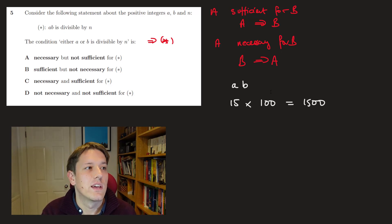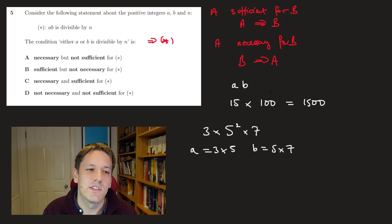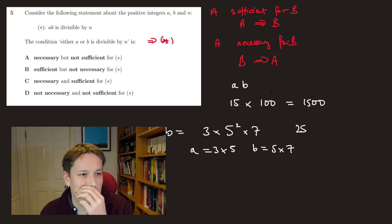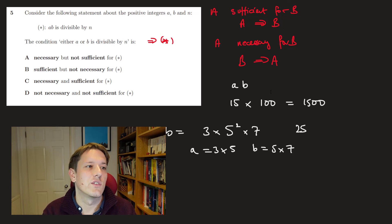Now, is it necessary? So is it the case that when a times b is divisible by n, that 1 of a or b has to be divisible by n? And there are tons of examples here that show this isn't true. You can pick all sorts of ones here. I went for 3 times 5 squared times 7. And now, if we thought of a as 3 times 5, and b as 5 times 7, and this is a times b, then the number 25, well, a times b is divisible by 25, because it's got a factor of 5 squared, but neither a nor b are divisible by 25. So that means that we've got sufficiency, but this is not necessary for this to be true. There are cases where a times b is divisible by n, but this is not true, so it's not necessary. So the answer is sufficient, but not necessary.